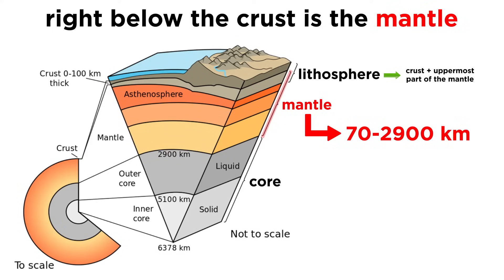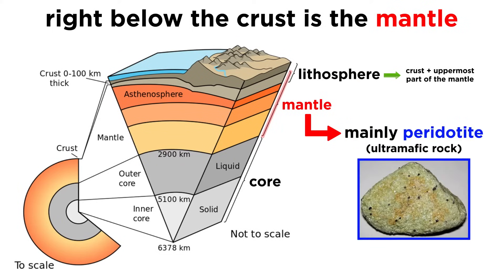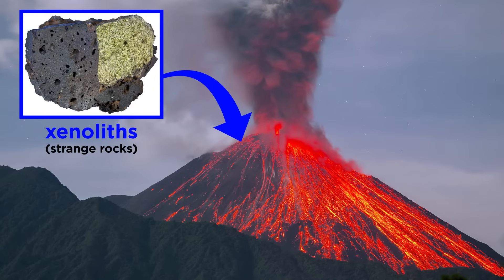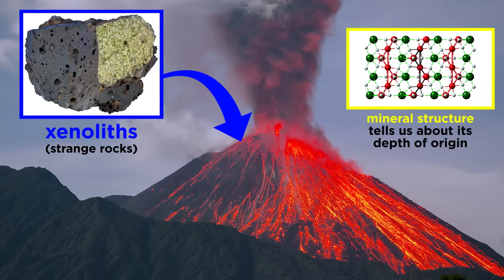The mantle extends from 70 to 2,900 kilometers below the surface, and is mainly composed of an ultramafic rock called peridotite, which is mainly composed of the mineral olivine, or MgFeSiO4. Geologists have found xenoliths, or strange rocks, of peridotite in massive volcanic eruptions. By analyzing the minerals in peridotite, scientists can determine what depth the peridotite came from.